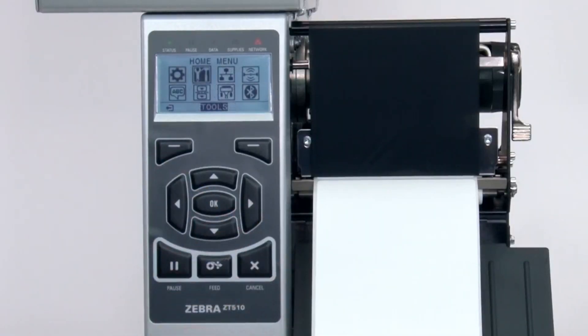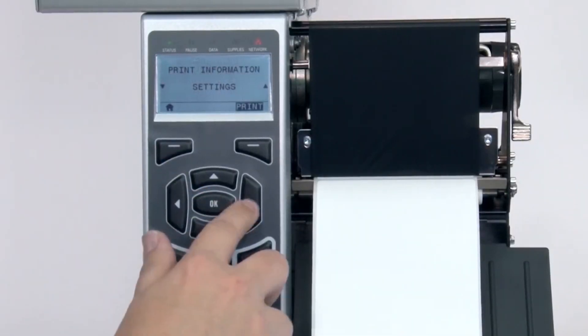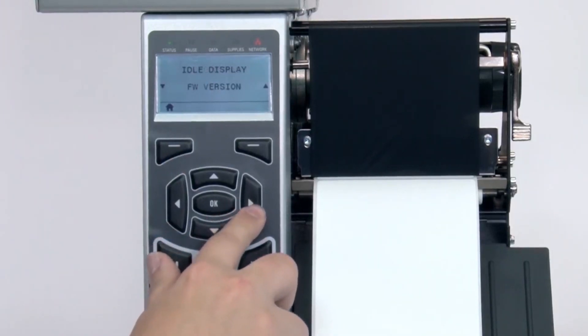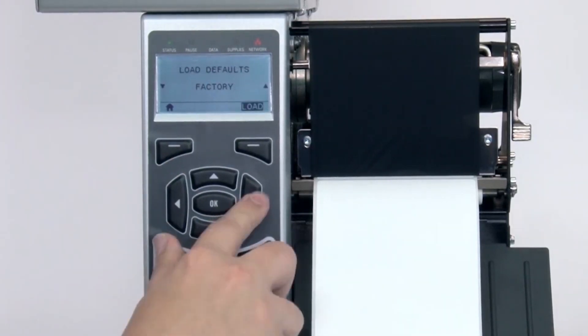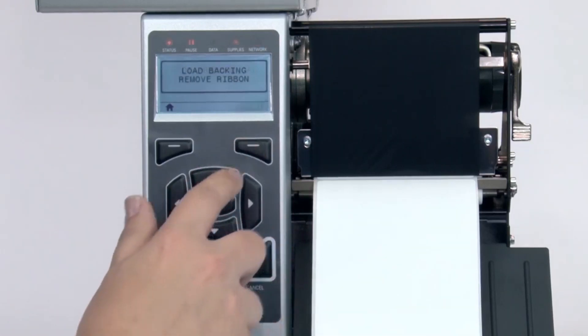After you have the sensor properly located, select Media Ribbon Calibration in the menu. Press the right select button under the display to start. Be careful not to press the button more than once.